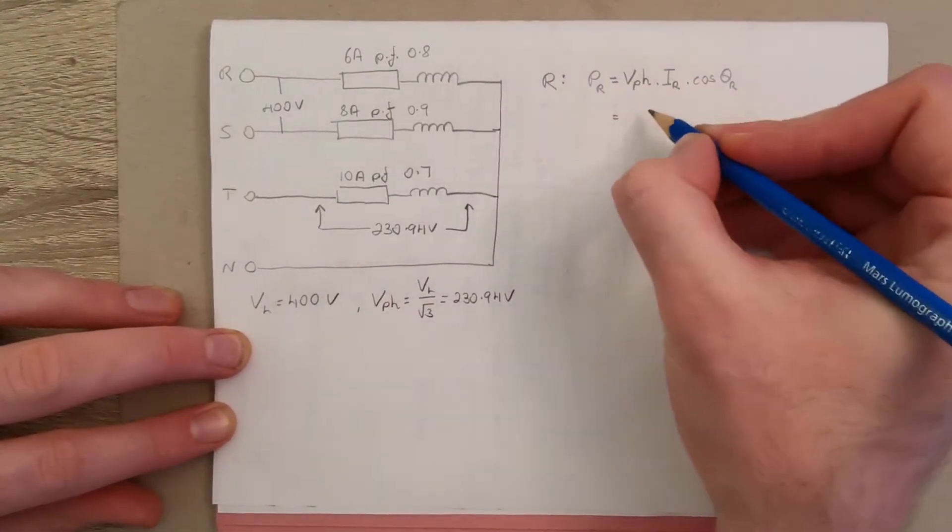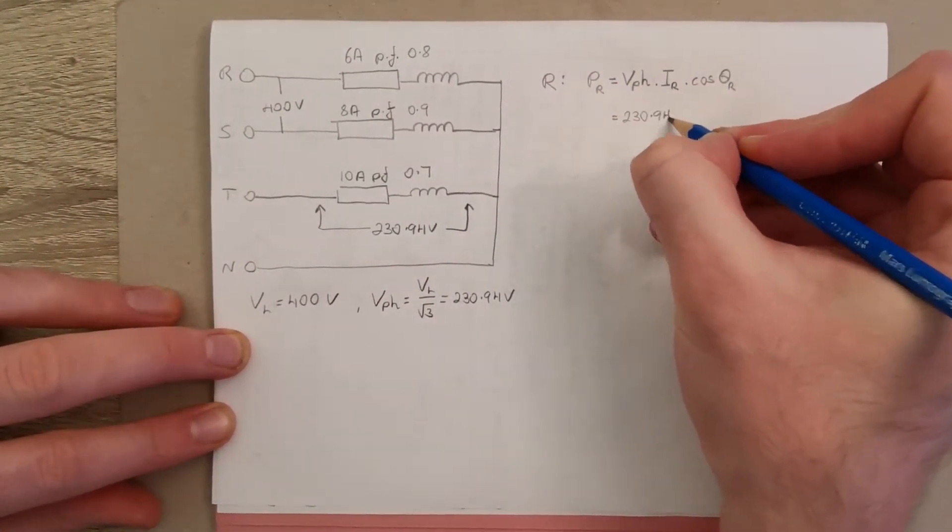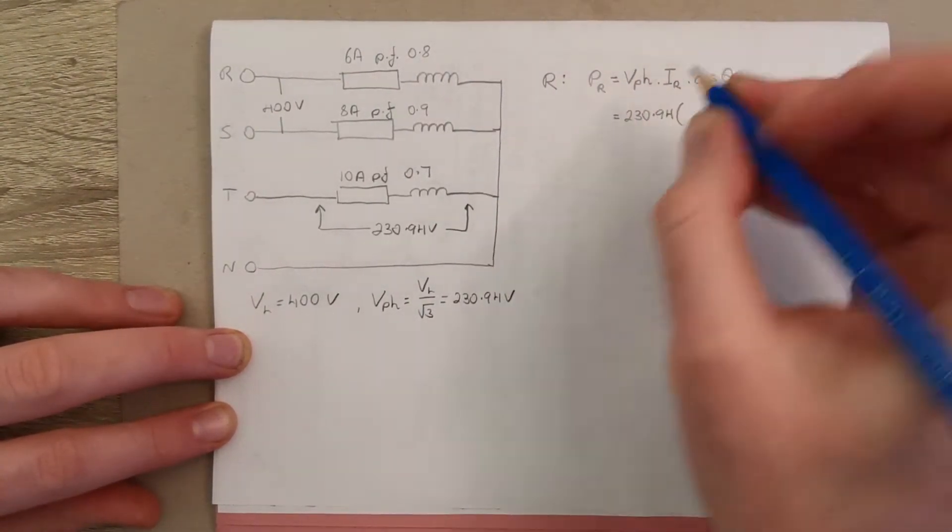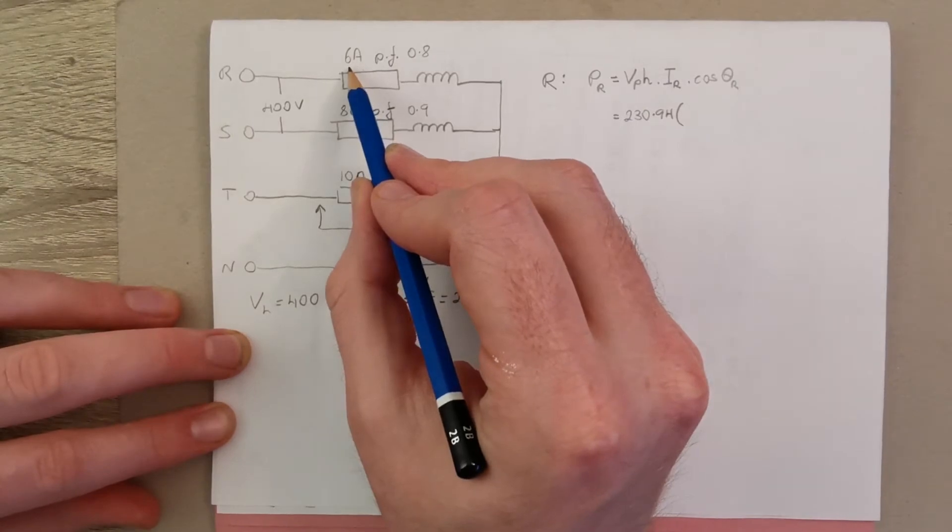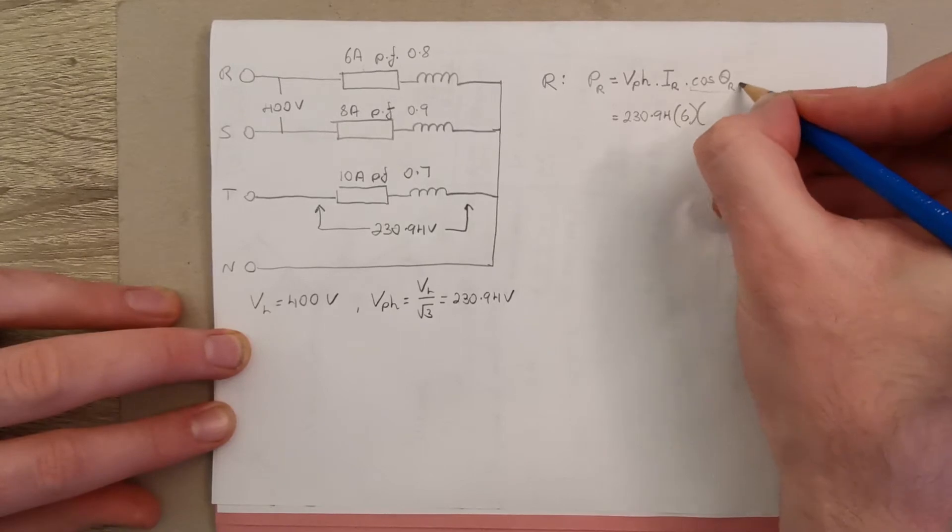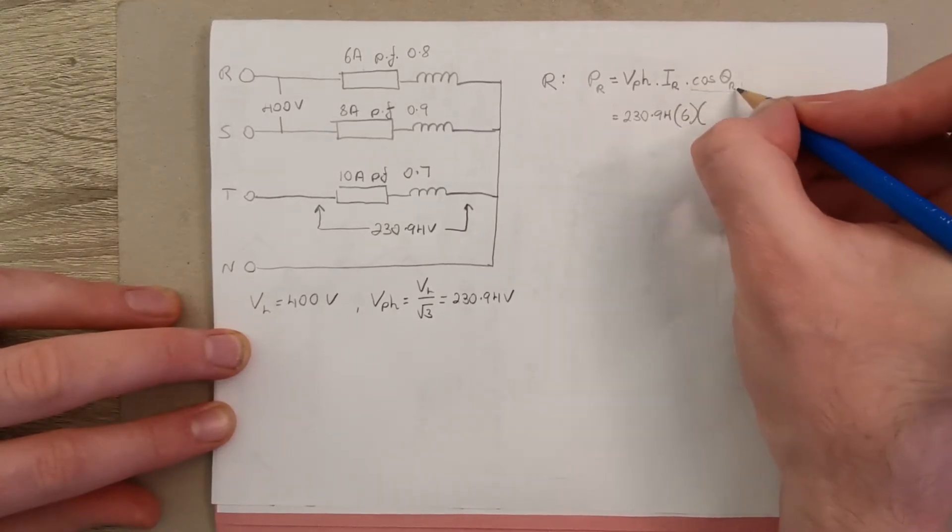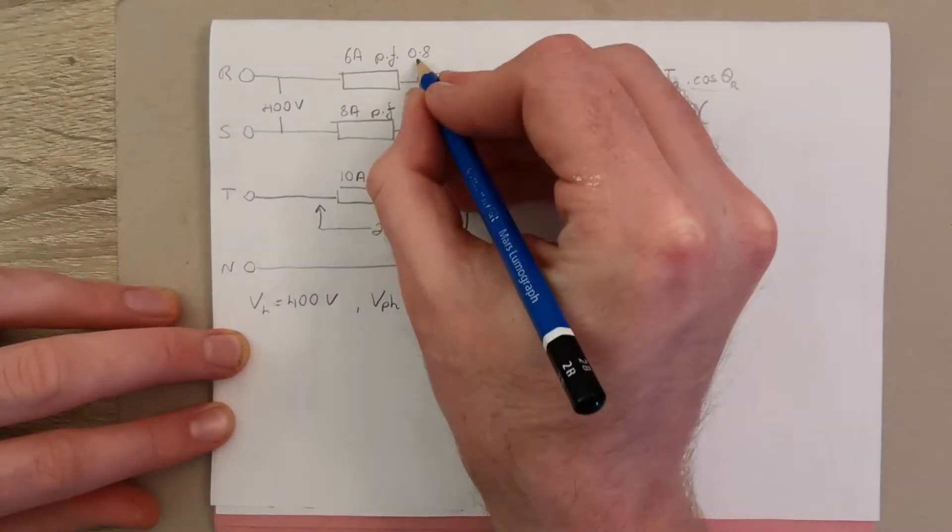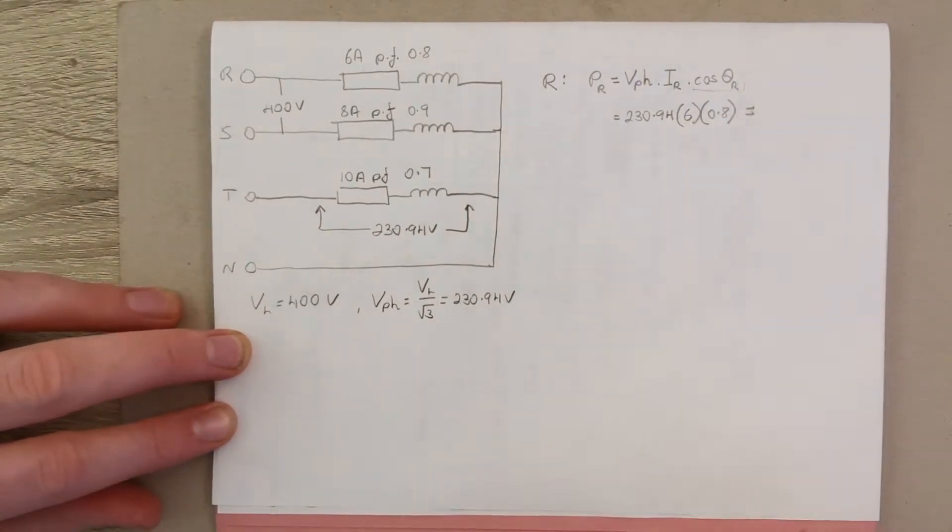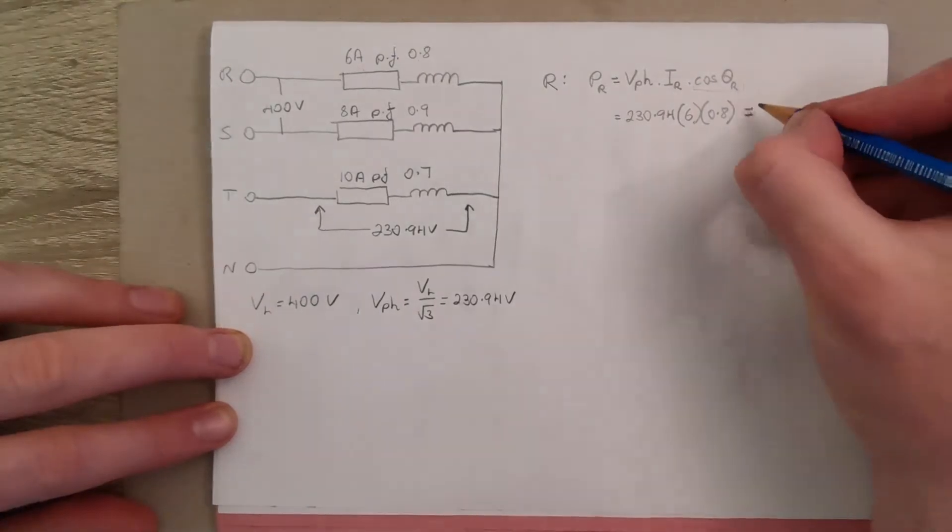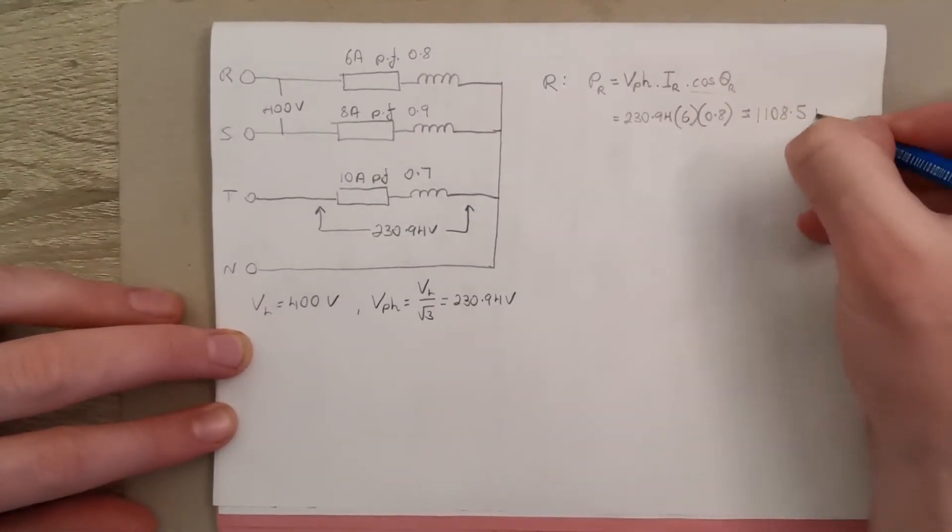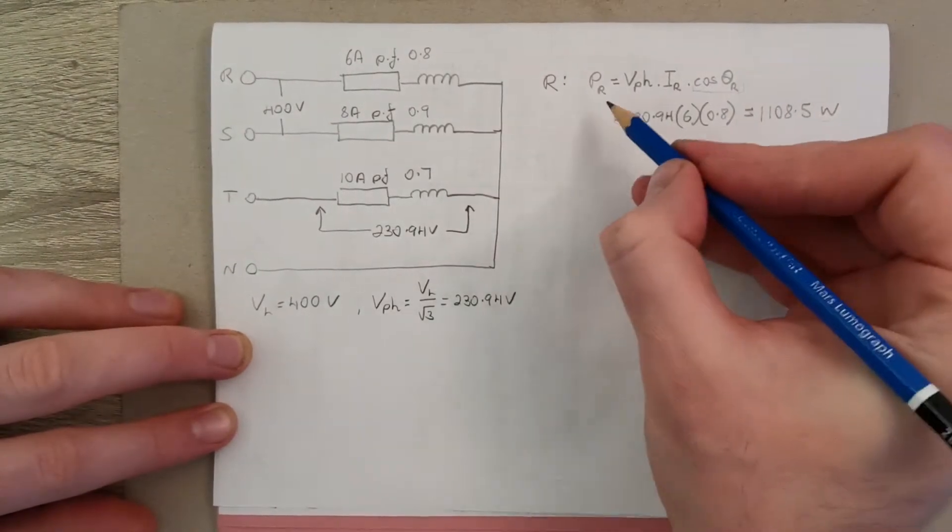So we have 230.94, that's our phase voltage we worked out, multiplied by IR which is 6 amps, multiplied by our power factor. Remember our power factor is equal to the cosine of the phase, so our power factor here is 0.8. If you put that into your calculator it works out at 1,108.5 watts, because this is real power P.